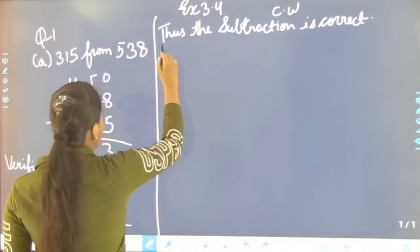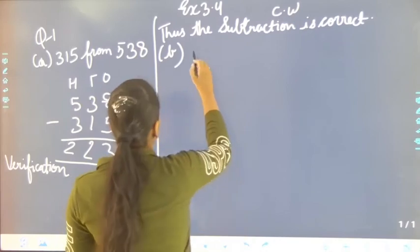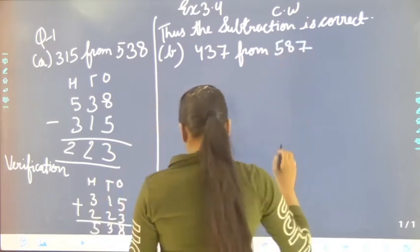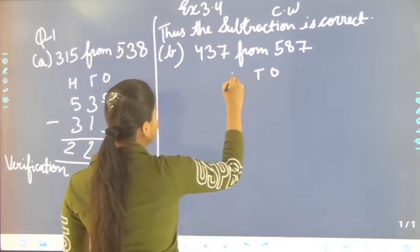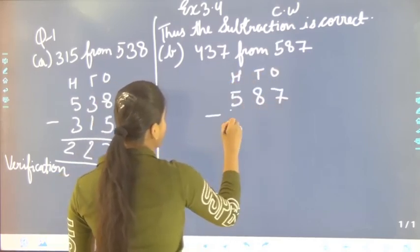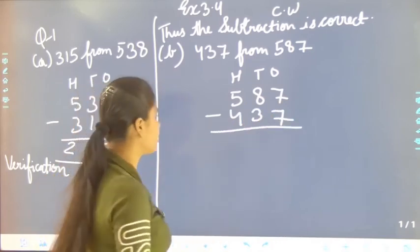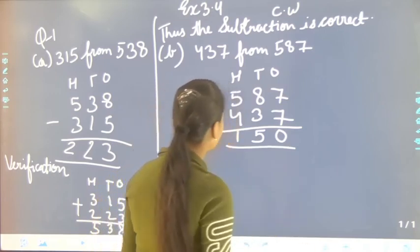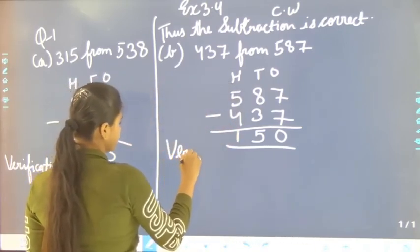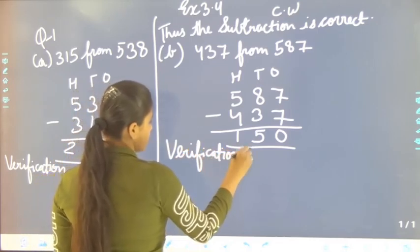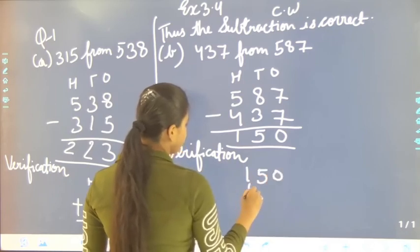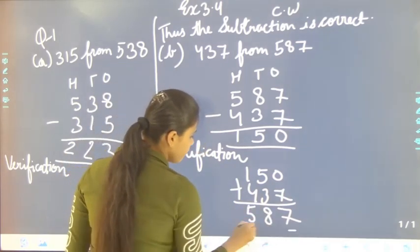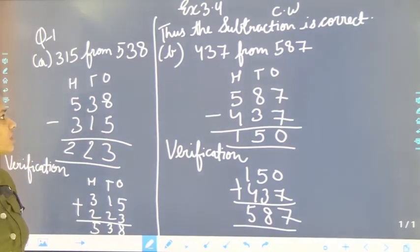Now move to the next part, that is B — 437 from 587. Again we write ones, tens, hundreds. 587 minus 437. 7 minus 7 is 0, 8 minus 3 is 5, and 5 minus 4 is 1. Again we do verification: 150 plus 437. 7, 5 plus 3 is 8, and 4 plus 1 is 5. That is 587. Thus, the subtraction is correct.